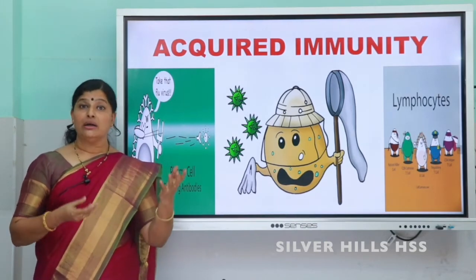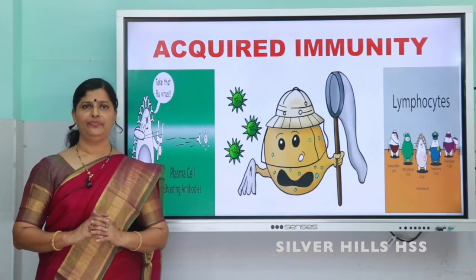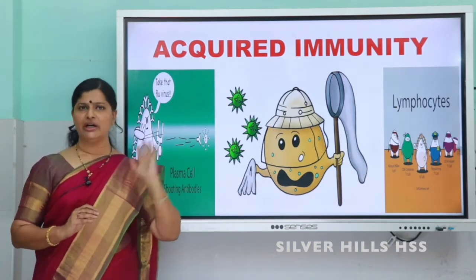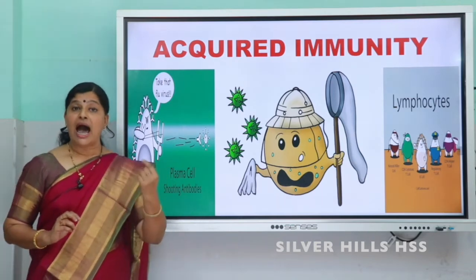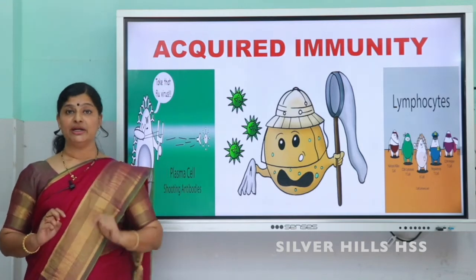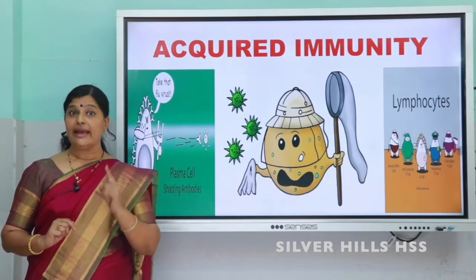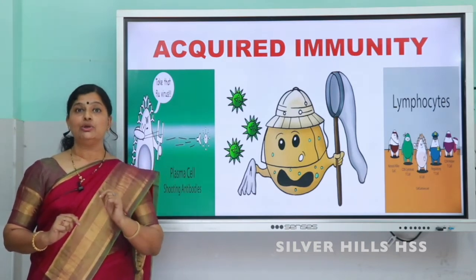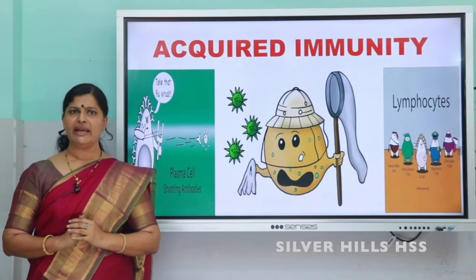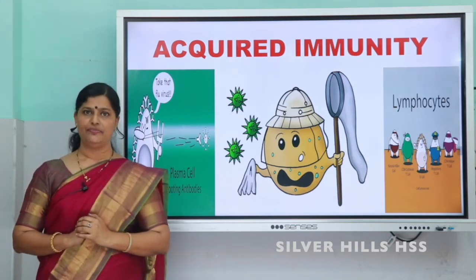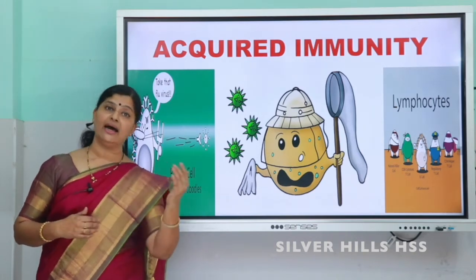Sometimes the antigen is a stronger one, so the body gets affected by the disease. After two weeks you recover from the disease. Then after some time, say two or three years, another chickenpox virus tries to enter your body. Our lymphocytes are memory-based, so the antibodies will immediately identify the antigen and try to kill it. This response of the body is called the secondary response, which is stronger than the primary response.